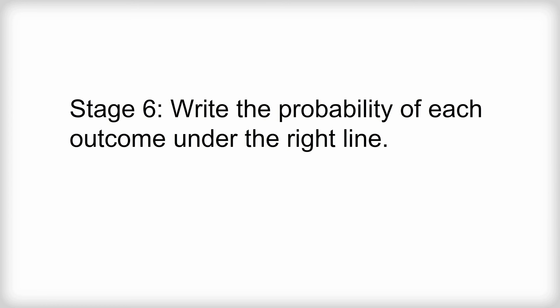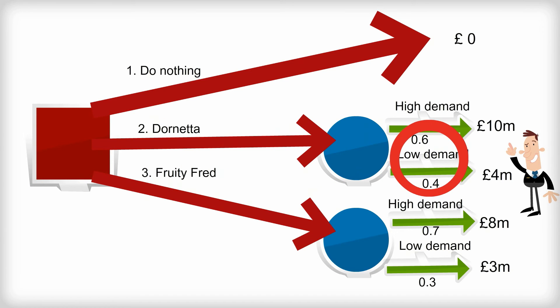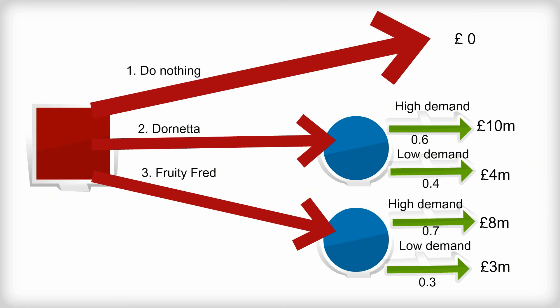Stage six: write the probability of each outcome just under the line showing the outcome. If percentages are used, the total for each option must be 100% — for example, the probability of high demand for Dornetta is 60% and for low demand it's 40%. Where decimals or fractions are used, the total of the outcomes should equal exactly one. Stage seven: note the investment or expenditure required under the relevant option line — for example, Dornetta will have a capital cost of £3 million.